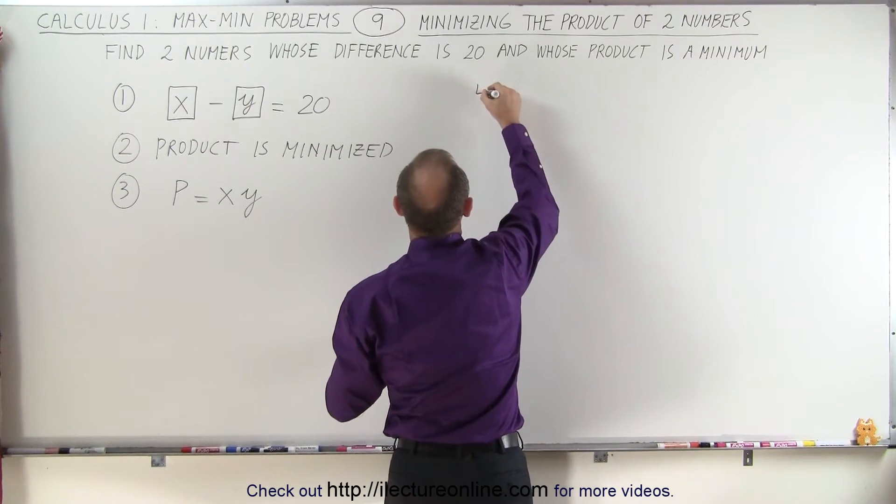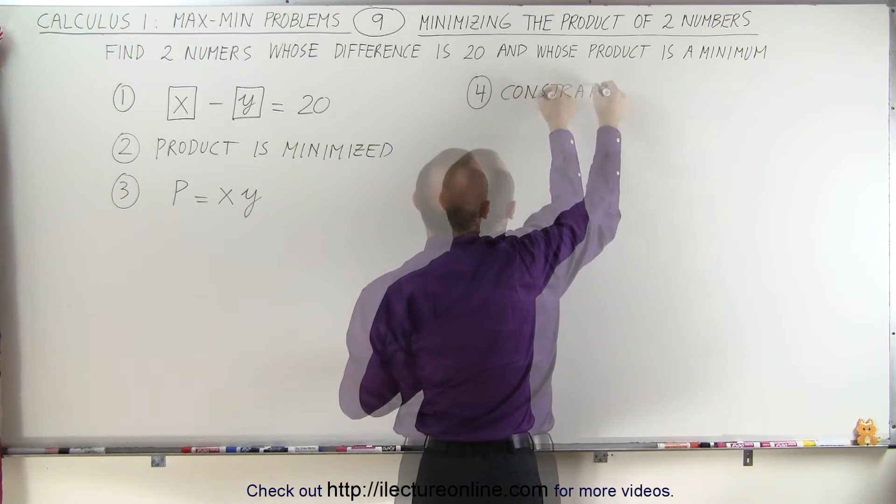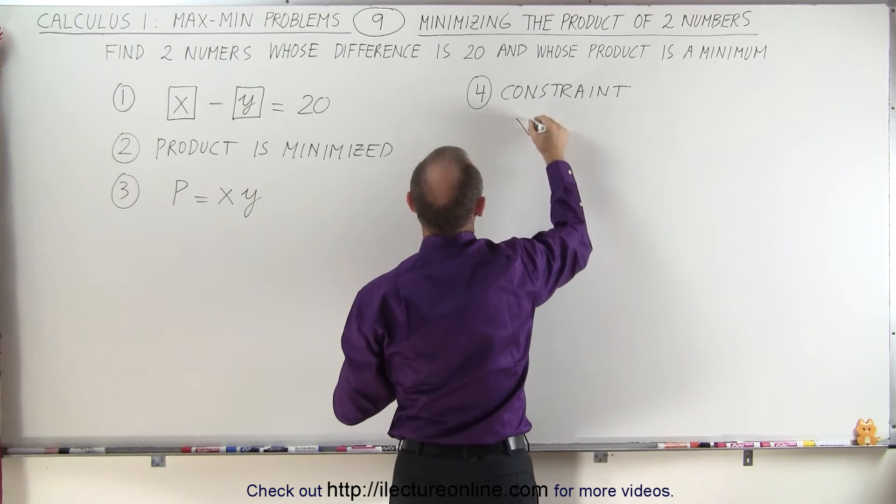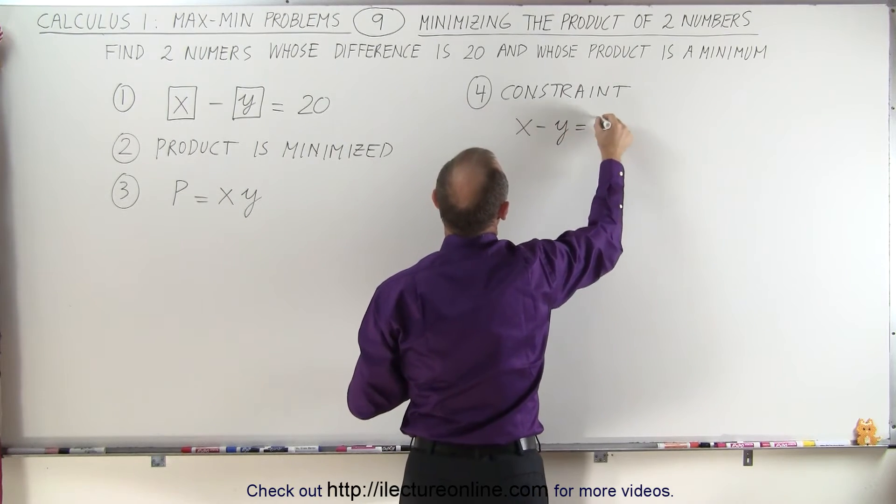So step four, we find a constraint. And in this case, the constraint tells us that X minus Y is equal to 20.